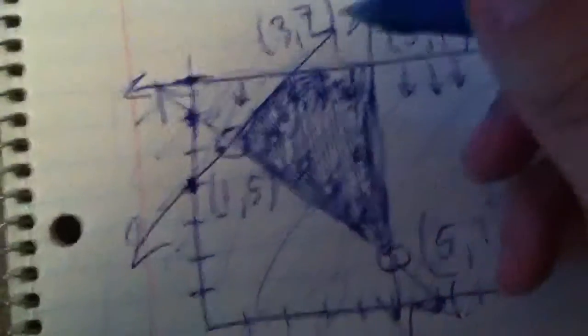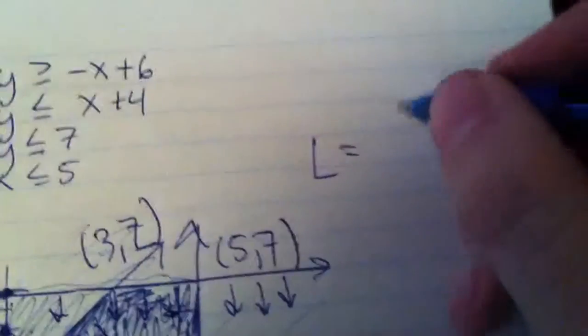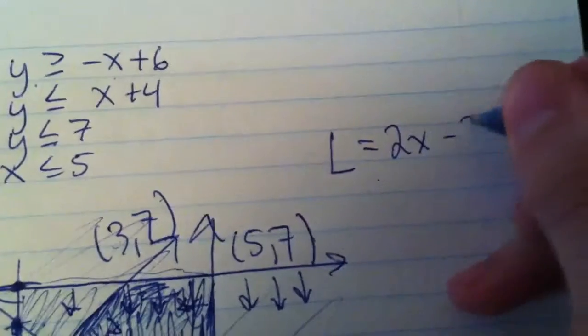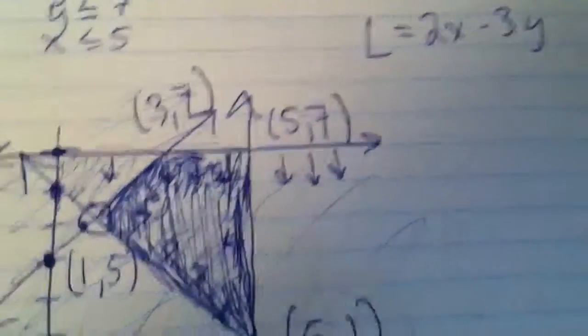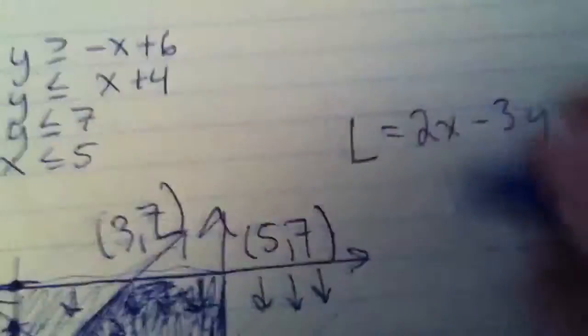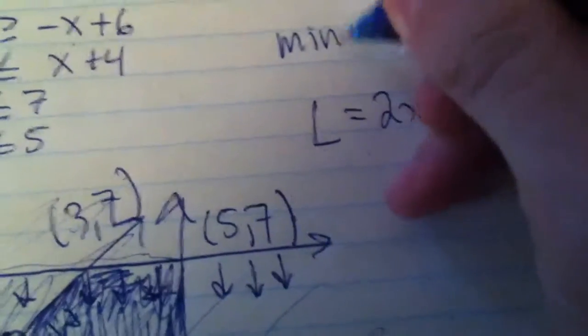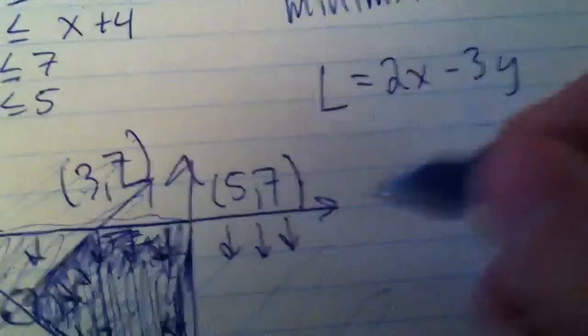So, and then you just test these in that equation. I'm looking at it now. 2x minus 3y. Then you can just put all these points in for x and y, and then whichever one gives you the most, or least. We want to minimize. That's why it's an L. So you want the least, the least difference out of that.